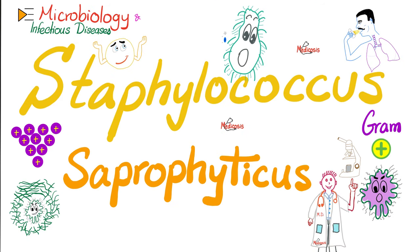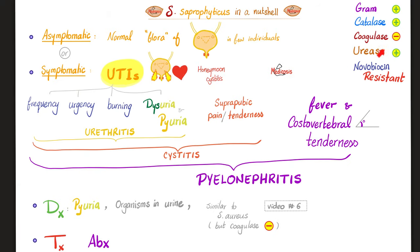Next: Staphylococcus saprophyticus and urinary tract infections. Do not put novobiocin in your genital area because it will not kill Staph saprophyticus and will not cure your honeymoon cystitis. Diseases caused by Staph saprophyticus are all urinary tract infections, starting with urethritis, then up to the bladder with cystitis, then up to the kidney and renal pelvis with pyelonephritis.